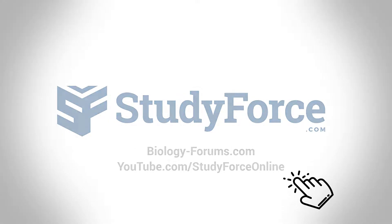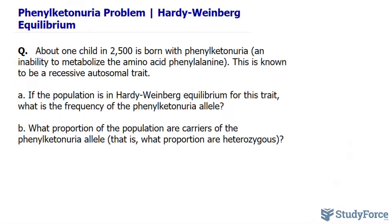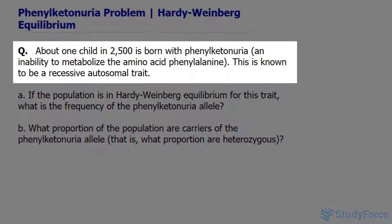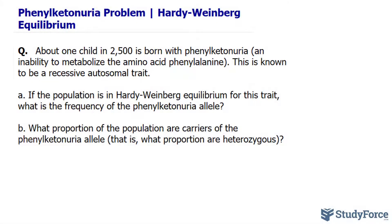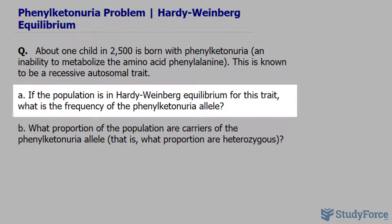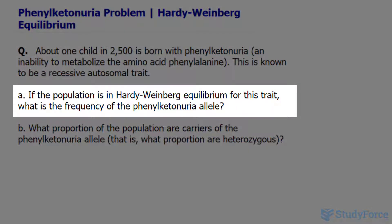In this lesson, we'll look at a Hardy-Weinberg equilibrium problem involving the genetic condition phenylketonuria. The question reads: about one child in 2500 is born with phenylketonuria, which is an inability to metabolize the amino acid phenylalanine. This is known to be a recessive autosomal trait, autosomal meaning that the gene is found in chromosomes 1 through 22. If the population is in Hardy-Weinberg equilibrium for this trait, what is the frequency of the phenylketonuria allele?